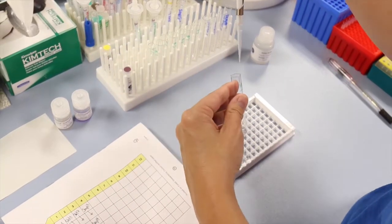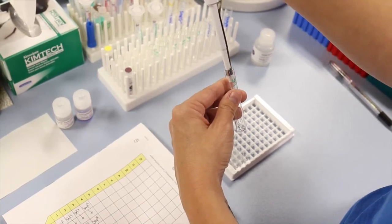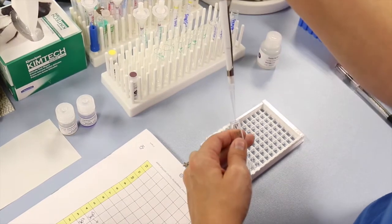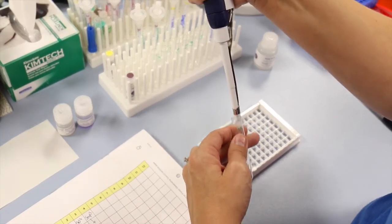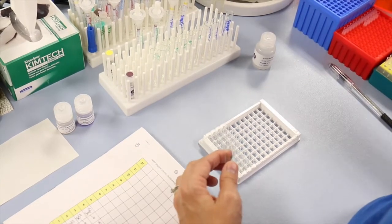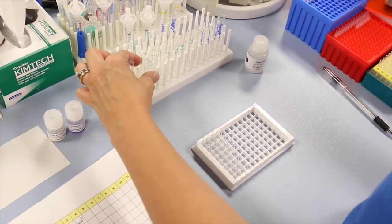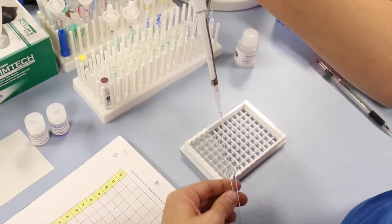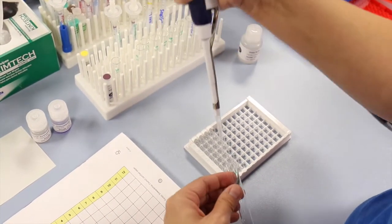Carefully pipette standards and samples into the defined wells using a fresh pipette tip for each standard or sample. Make sure that you use duplicate wells for each standard and sample. Pipette the standards and samples towards the bottom of the well.